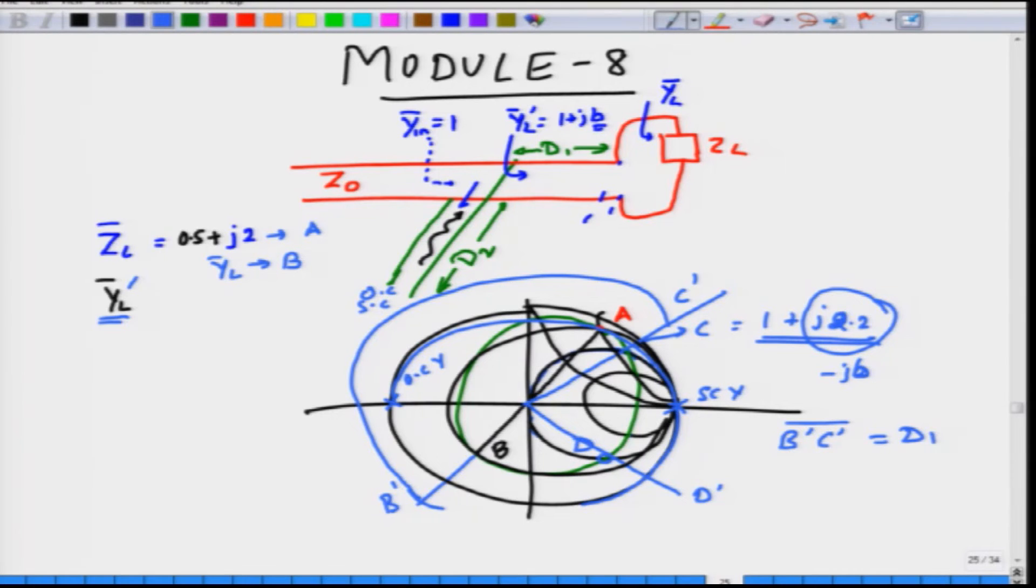And in fact, in most printed circuit boards, it is kind of easier to deal with short circuited stubs rather than open circuited stub simply because open circuited means there is a chance for radiation also happening. This completes our shunt stub matching network.